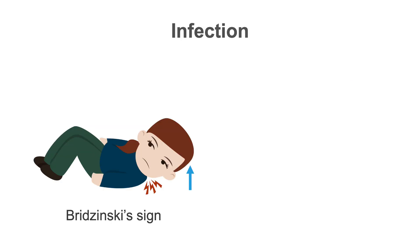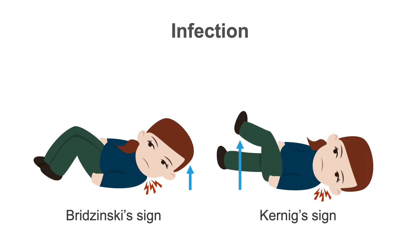Nuchal rigidity is demonstrated with the Brudzinski or Kernig signs. The Brudzinski sign is elicited by stretching the meninges when flexing the neck forward, and pain is produced. The Kernig sign is elicited by extending the legs after the hips are flexed up, and pain is thus produced.